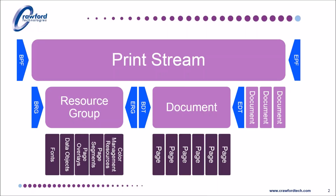In the first recording, I described an AFP file as a series of objects with a hierarchy to provide a structure and meaning to them all. In the words of the standard, an AFP file is a data stream, which is a continuous ordered stream of data elements and objects conforming to a given format.